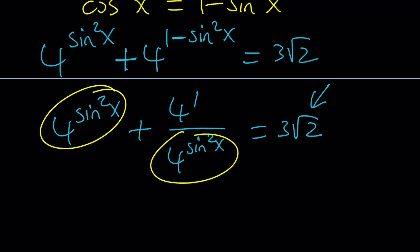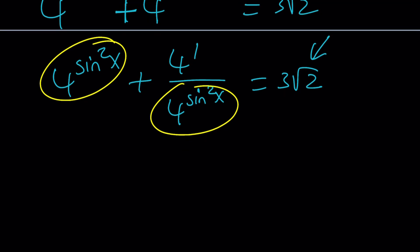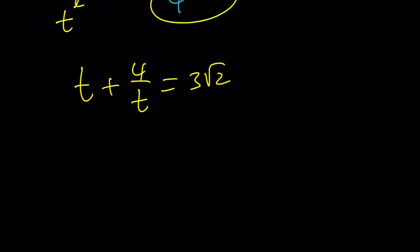So this is the coolest part. We can use substitution and call this t. And now we have t plus 4 over t equals 3 root 2. Awesome. Let's make a common denominator or just multiply everything by t. t squared plus 4 and t cancels out equals 3 root 2t. t squared minus 3 root 2t plus 4 equals 0.